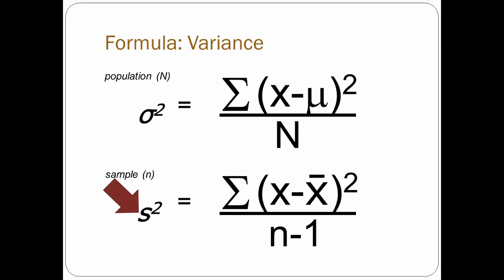To summarize: to calculate the variance of a sample, you take the difference between each score and the mean, and square it. Add up all the results, then divide by the number of observations minus 1.